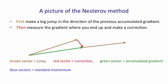Then again, at the place where we end up, we measure the gradient and we go downhill. That corrects any errors we made and we get our new accumulated gradient.